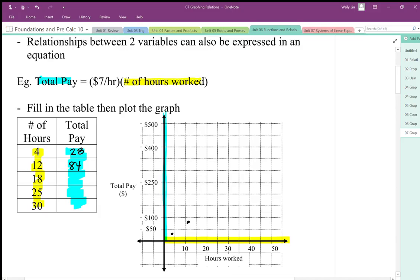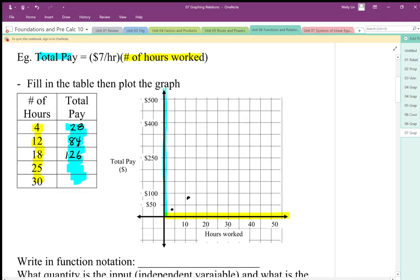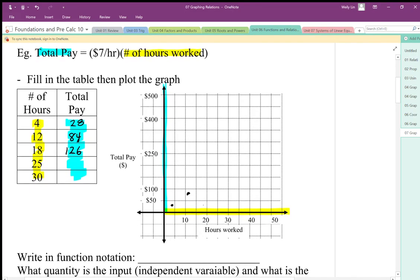18 hours times $7 an hour, 10 times 7 is $70, 8 times 7 is $56. So adding those together, I get $126 of total pay. So at 18 hours, $125 is right about there. And at this point, I can kind of see that these dots seem to be lining up. So it looks like there's a straight line pattern here.